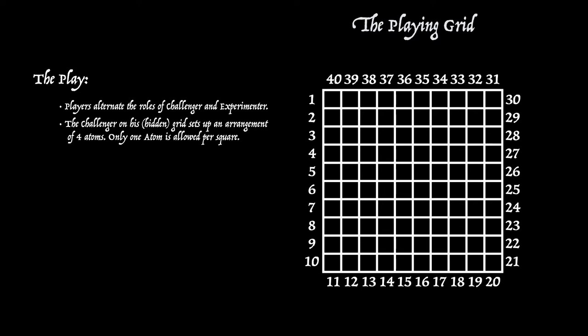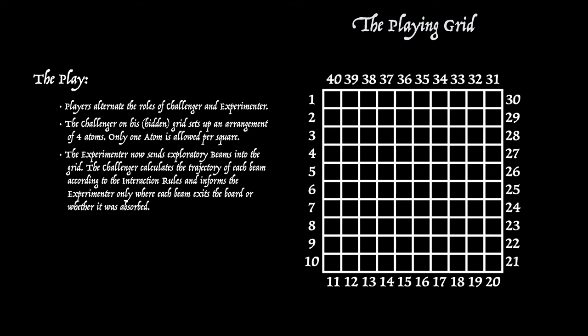Now the challenger sets up his hidden pattern of atoms, a molecule, four atoms in the normal game, and one atom per square. And this is kept hidden from the experimenter.